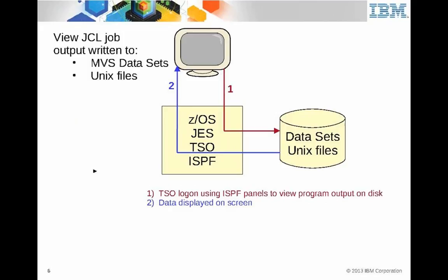If we use JCL to write to data sets — and you can also use JCL to write to Unix files — once written to a data set or Unix files, you can use TSO ISPF panels to view the program output on disk, and it will display the data back to the terminal. This is true for MVS data sets and Unix files. In the next session we'll talk about data sets and then Unix files.